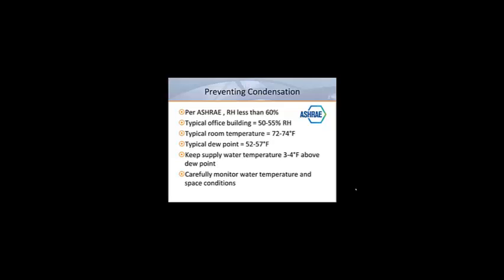In order to keep our cooling process sensible, it's critical that we prevent condensation from occurring on the beams. If we follow ASHRAE guidelines for good indoor air quality, we should keep the relative humidity of the room air below 60%. Most buildings operate at 50 to 55% relative humidity. At 72 to 74 degree room temperature, this corresponds to a dew point temperature of 52 to 57 degrees Fahrenheit. In order to prevent condensation, it's generally recommended that water temperatures should be 3 to 4 degrees Fahrenheit above the dew point. This means that the minimum water temperature should be 55 to 60 degrees Fahrenheit.